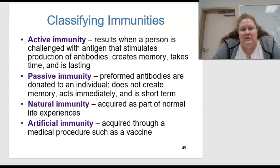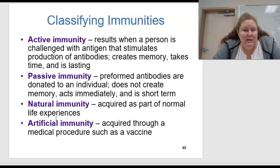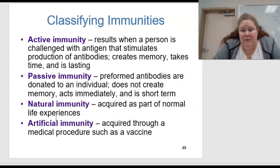Active immunity results when a person is challenged with an antigen that stimulates the production of antibody, creating memories — this can take time and is long lasting. Passive immunity is where preformed antibodies are donated to an individual — it does not create a memory, acts immediately, and is short term.